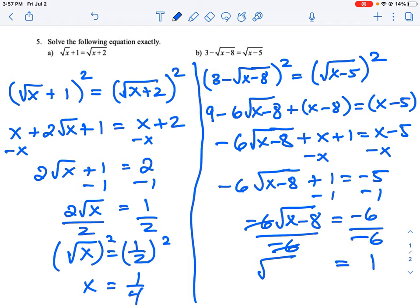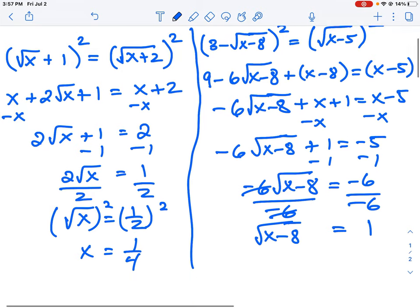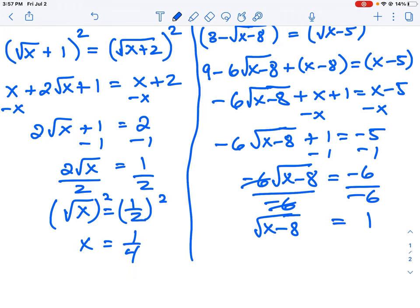Now again, we do the same thing that we did before, same strategy. We square both sides. So this is going to be x minus 8, and 1 squared is 1. And then finally, we just bring the negative 8 over, so x equals 9.